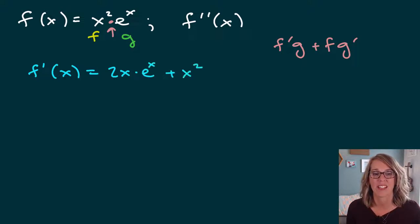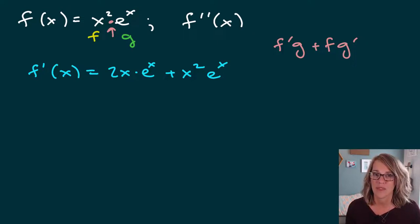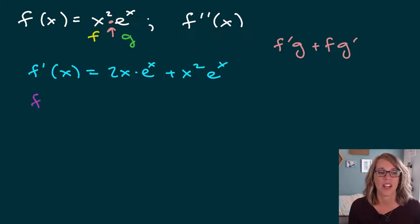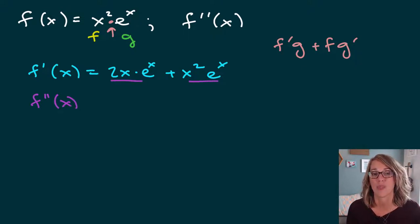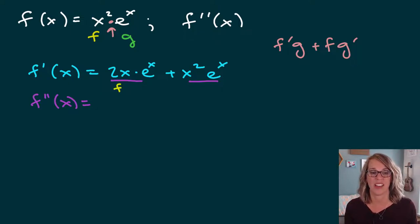Now we're going to leave f, so that's going to be x squared, and then we're going to take the derivative of g — there's not much to do because the derivative of e to the x is e to the x. So this is our first derivative. We're going to find the second derivative. As we are finding the second derivative, we need to apply the product rule not just once, but twice. These get pretty ugly pretty quick. f in the first term is 2x and g is e to the x.